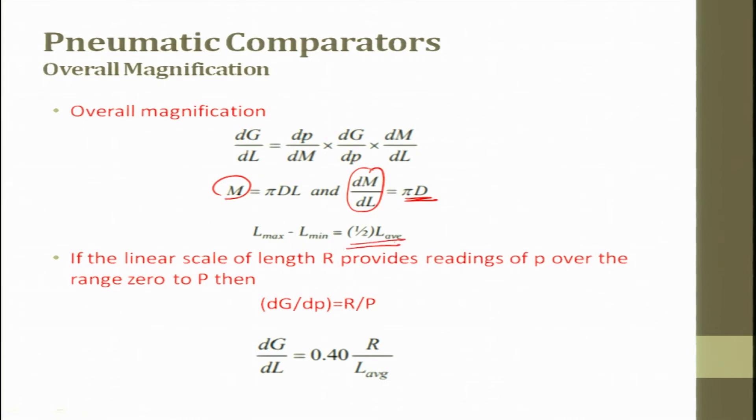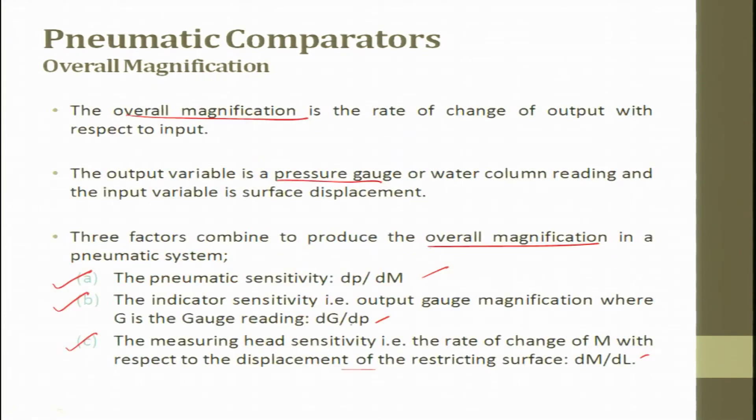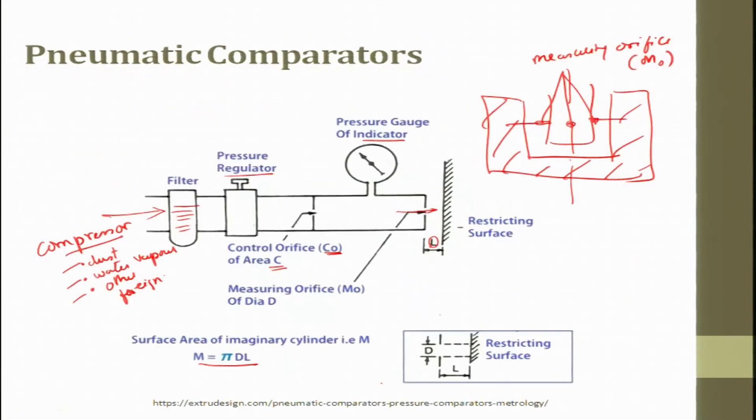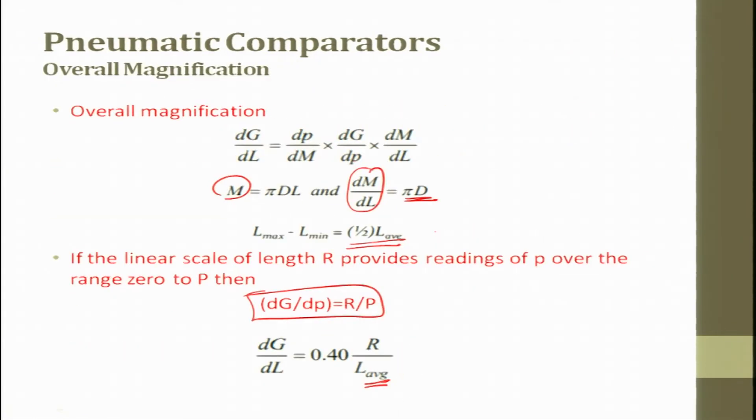The overall magnification is nothing but D G by D L is equal to D P by D M into D G by D P into D M by D L, where M is given by this and D M by D L is given by pi D. L max minus L min is equal to half. In the linear scale of R of the length R provides reading of P over the range of 0 to P then D P by D G is nothing but R by P and this is D G by D L which is the gauge. We have combined and we have got D G by D L is 0.4 times R by L average. This is your L, keep that in mind, this is D when we said pi D L this is what is D and L. In the linear scale of length R which provides the reading of P over the range of 0 to P then D G by D P equal to R by P. After this magnification this is what we try to get in this equation.